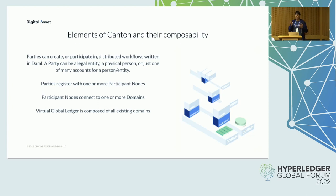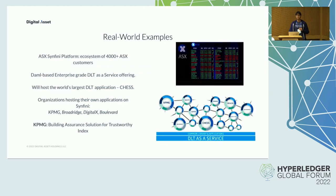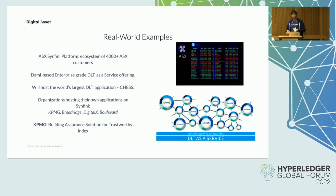Which leads to our vision: the global economic network of seamlessly interconnected businesses. Our vision is not a pie in the sky — it is happening today. One example of the evolution in composable applications for a global economic network is the Australian Stock Exchange and their newest DLT-as-a-Service platform, Symphony.